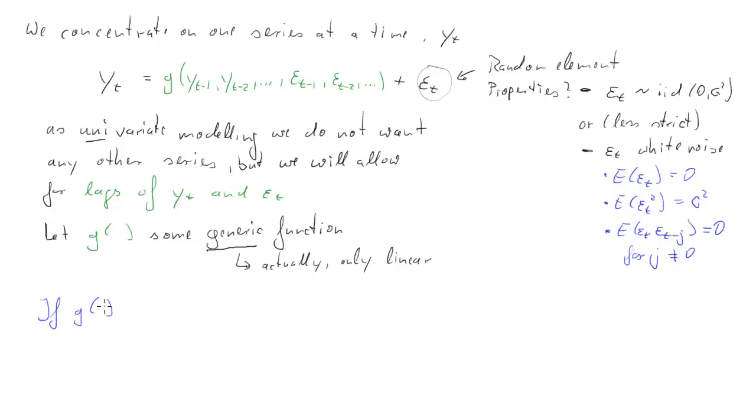Now, it's the properties of g that determines what process we are looking at. But if g only uses lagged values of yt, then we call this an autoregressive process, an AR process. An example for this is, for instance, an AR1 process.